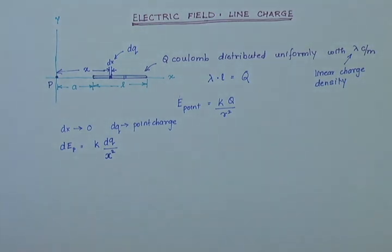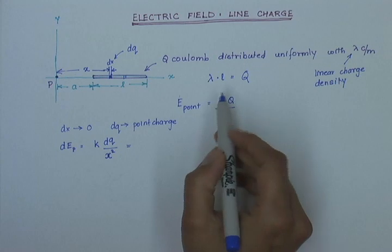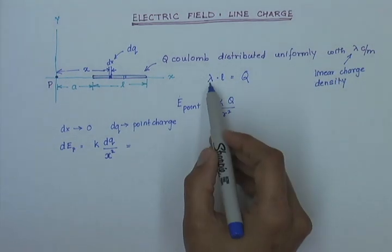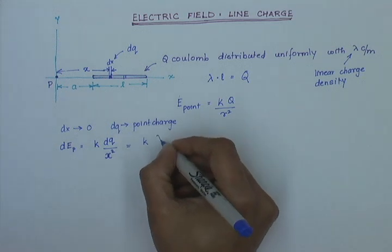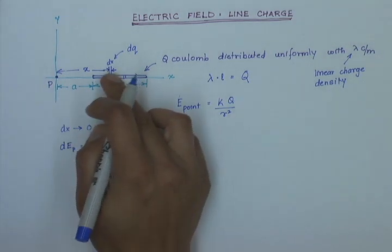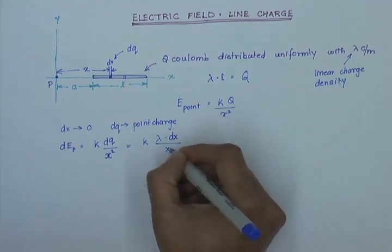And this is the electric field. Now, I know that the distribution is lambda coulombs per meter. And so, I can write dq as lambda times the width or the length and that is dx over x squared.